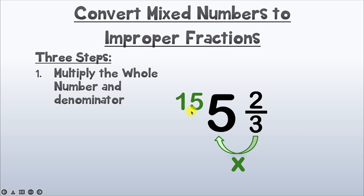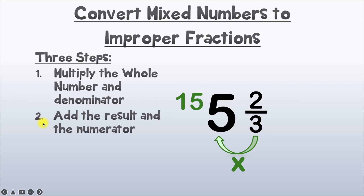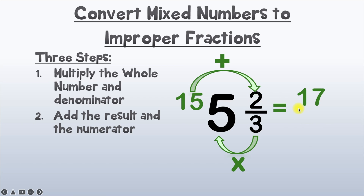Now let's go to step 2. Step 2 says to add the result — that 15 — and the numerator, which is 2. So we've got 15 plus 2, and that gives us 17.